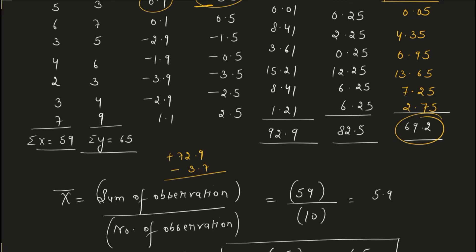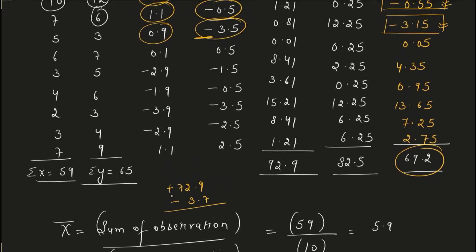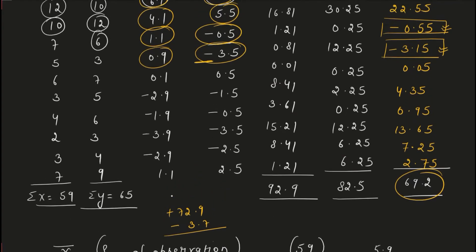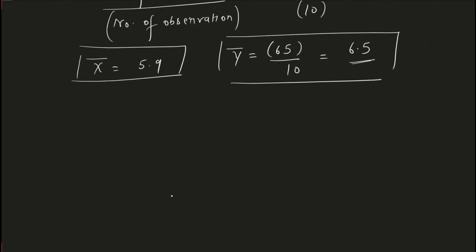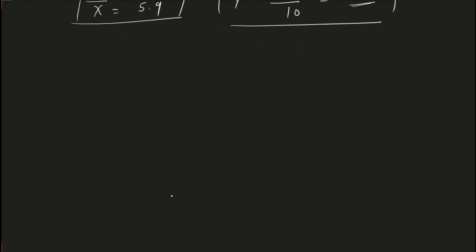Some students were commenting that I made a calculation mistake — no. Add the positive terms together, add the negative terms together, then take the difference. Many students make a mistake here, and this is exactly why Pearson Product Moment of Correlation gives wrong answers for most students. Now let's calculate the Pearson Product Moment of Correlation.